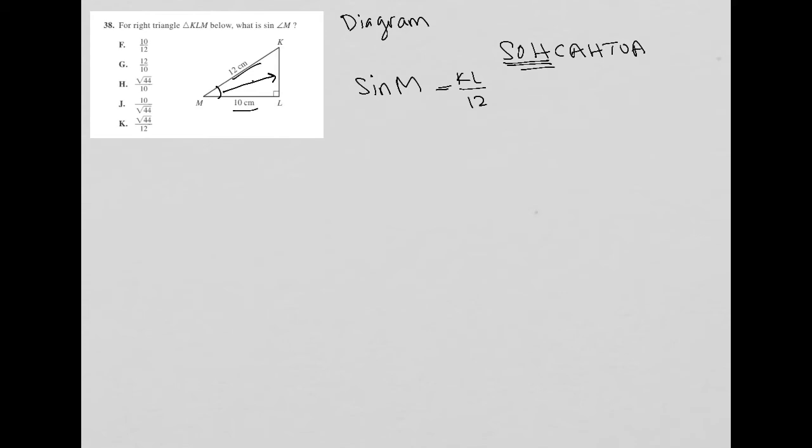So then if we know that these are 10 and 12, but we need to know what this is, which I'll just put a little question mark, we can use Pythagorean theorem here.